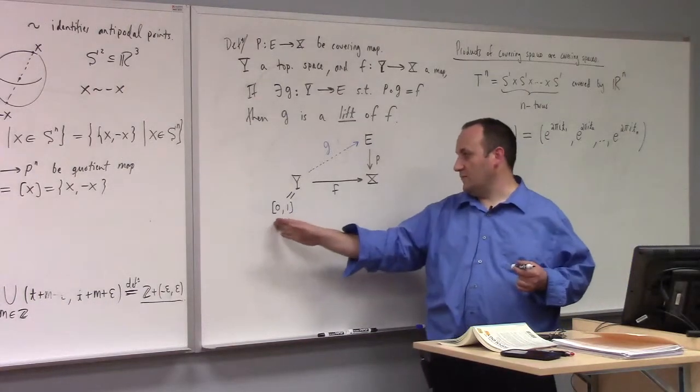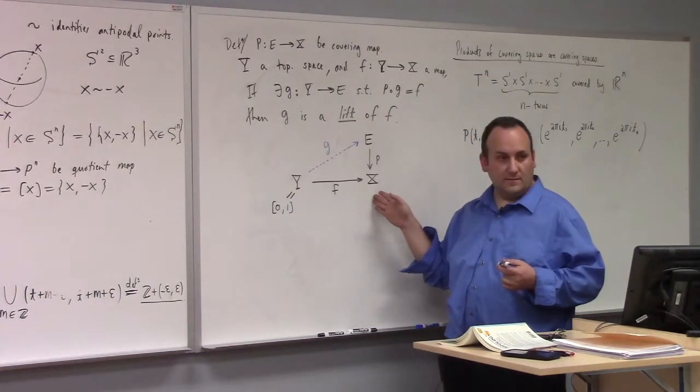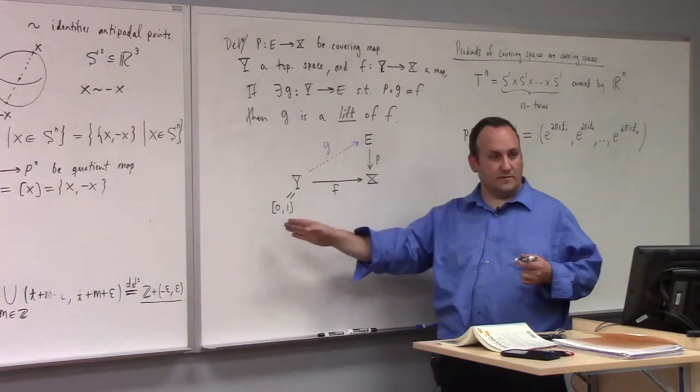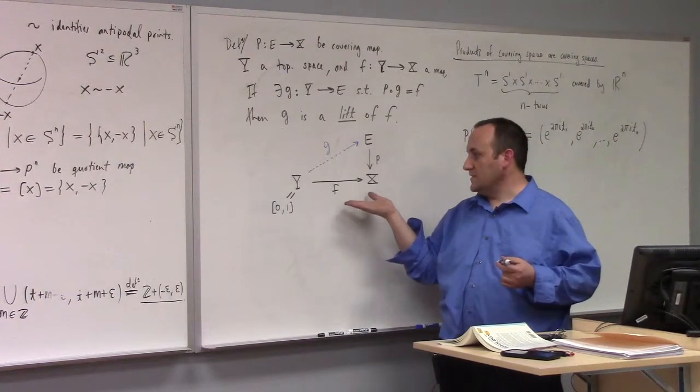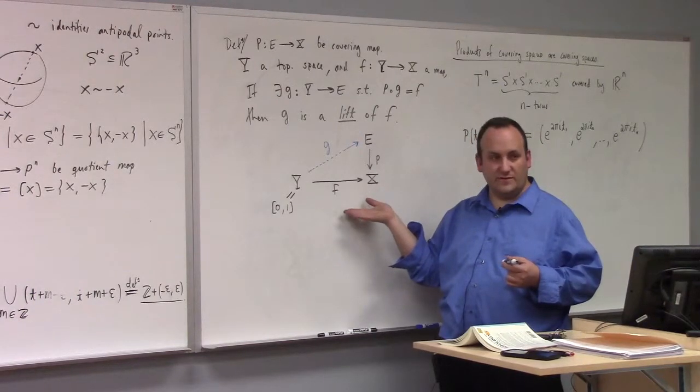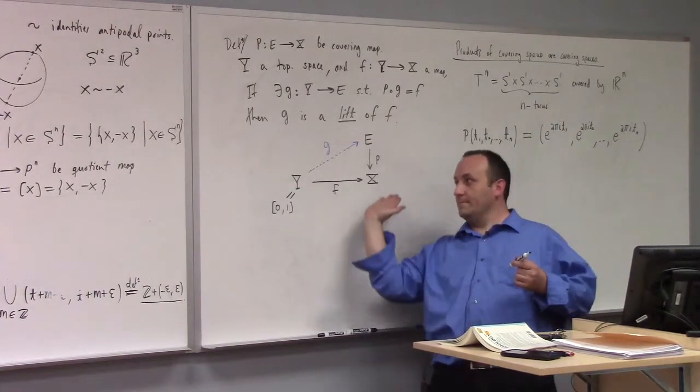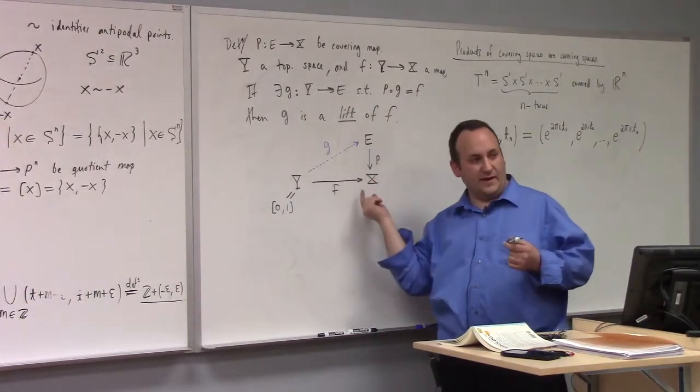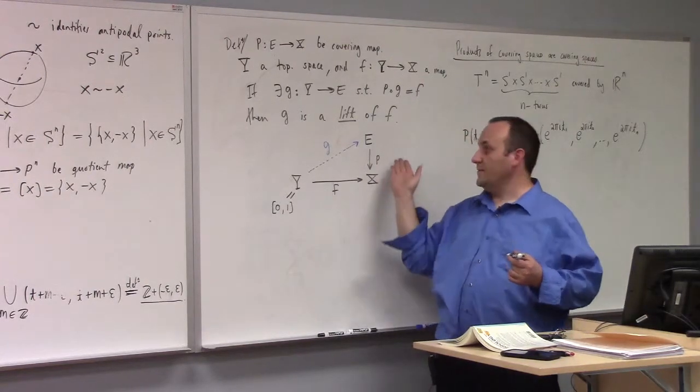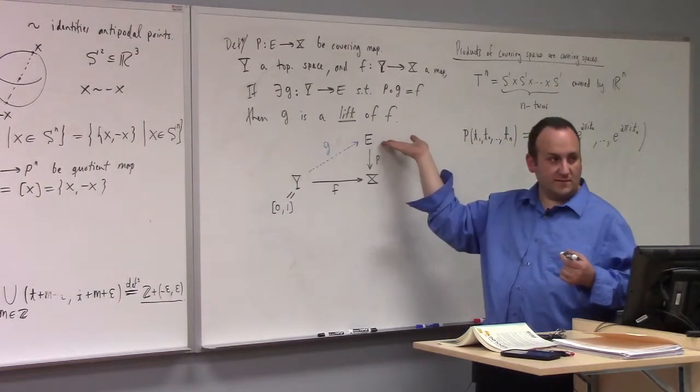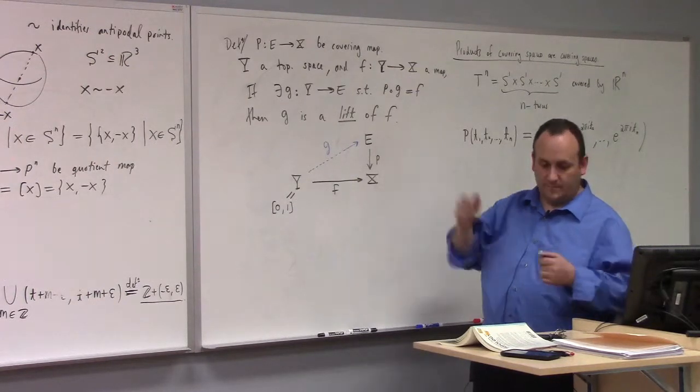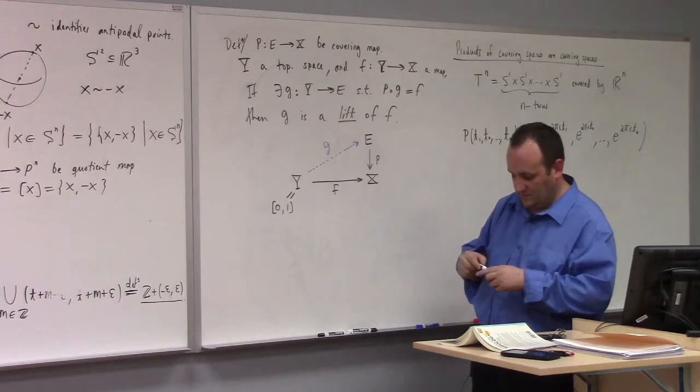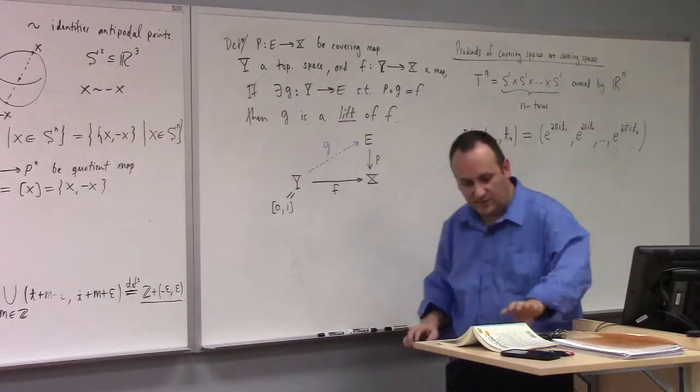What would a mapping f from [0,1] into X be? This is a path, right? So if you lift f, what does that give you? You take a path in X to a path in the covering space.